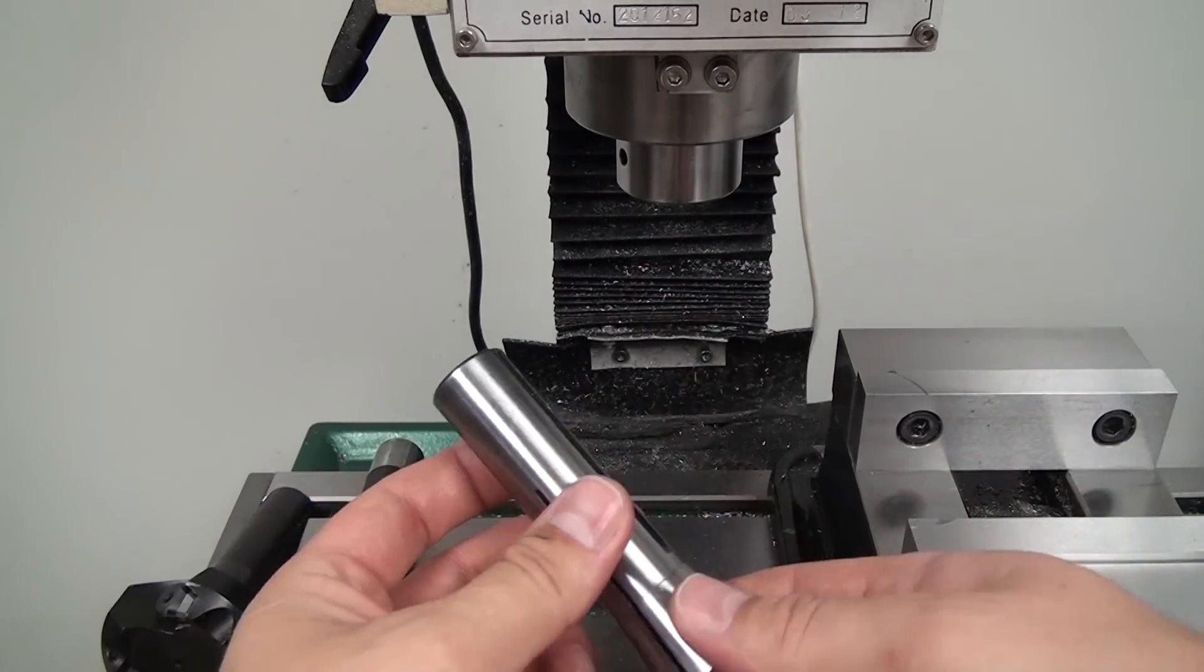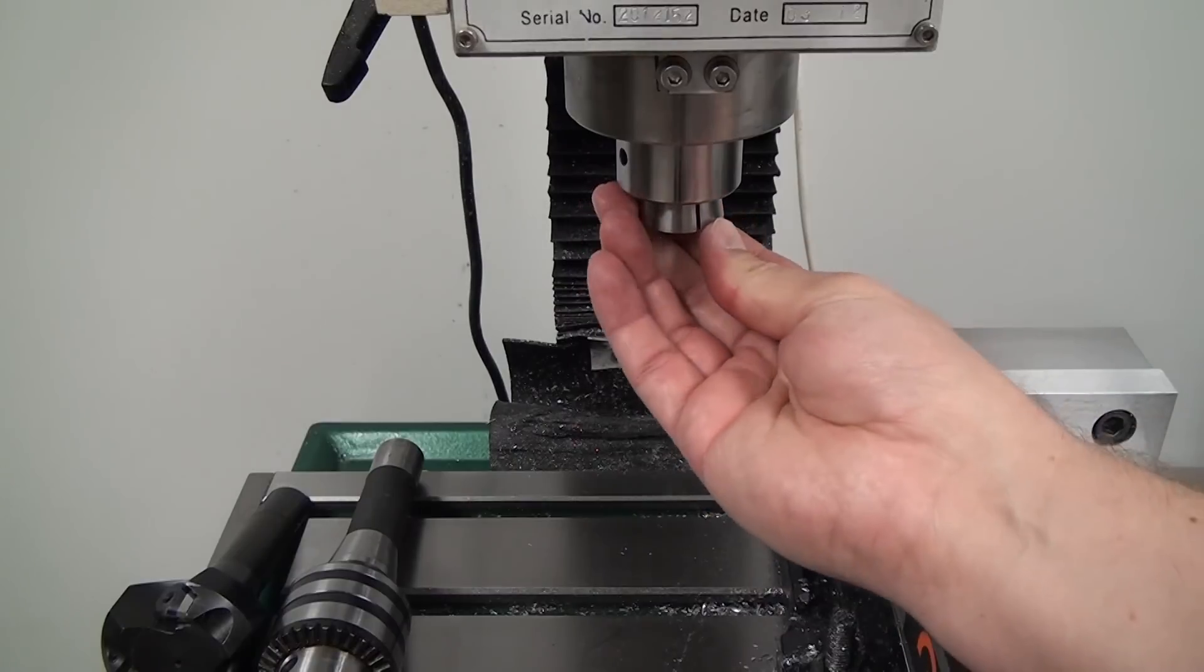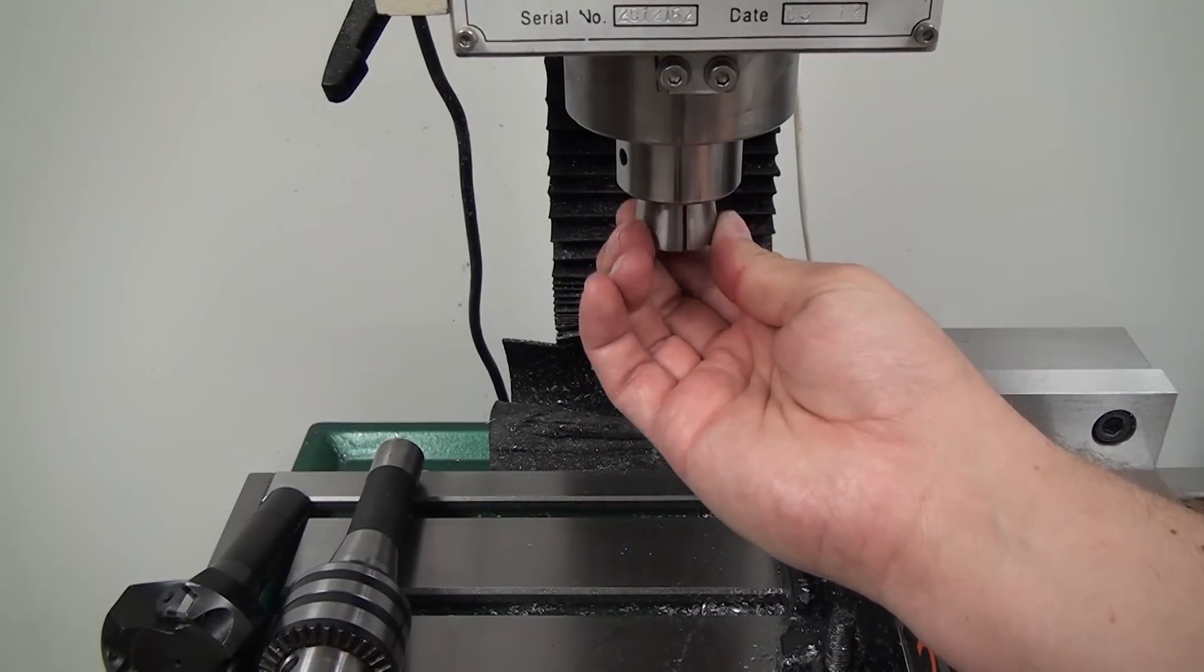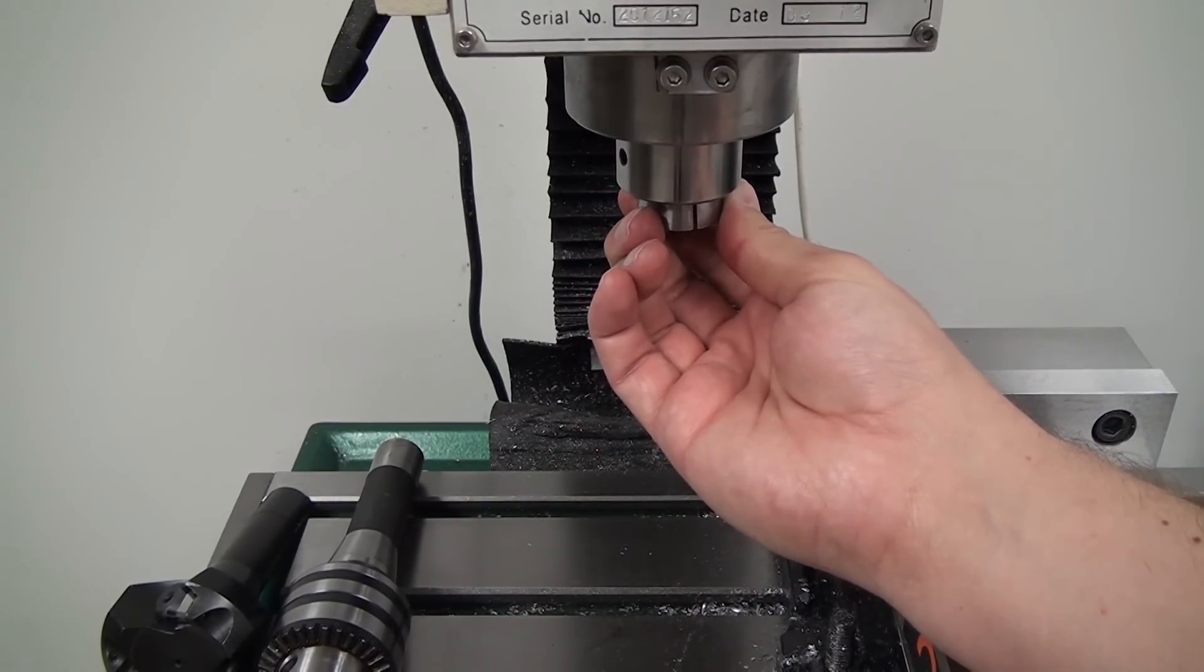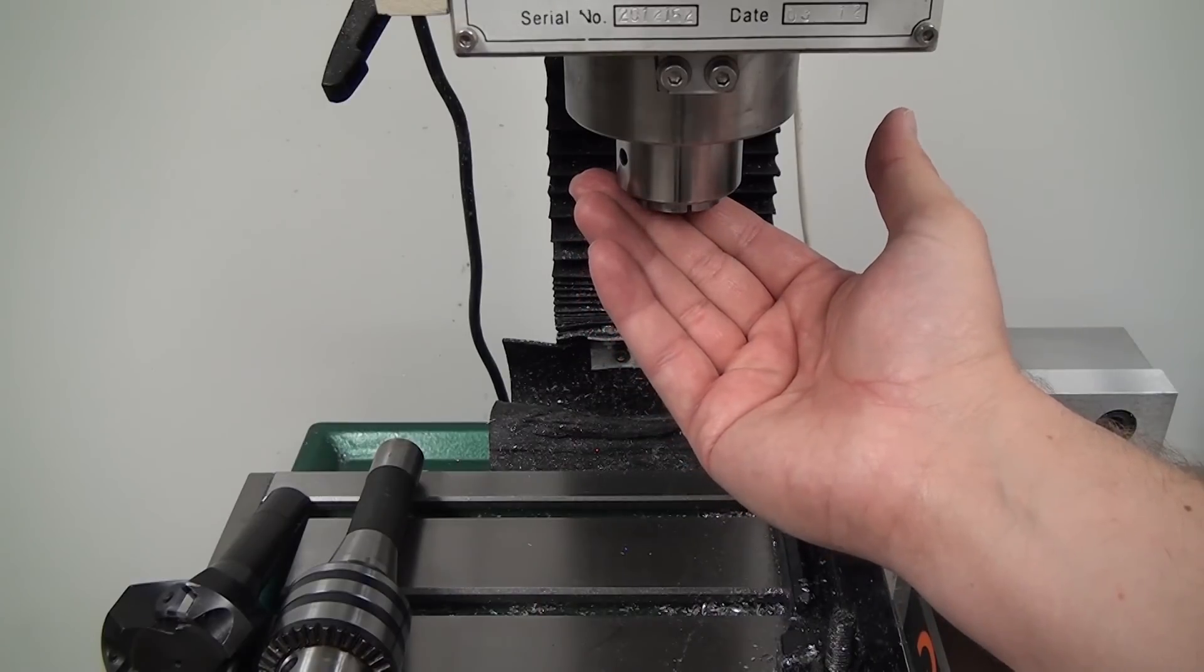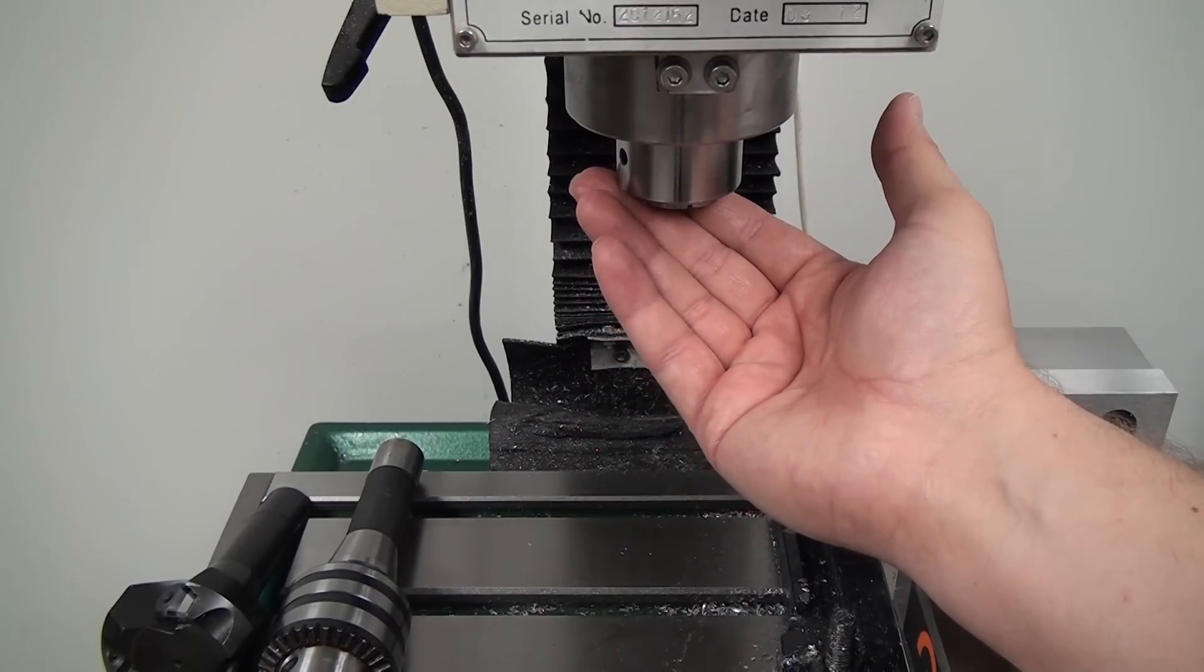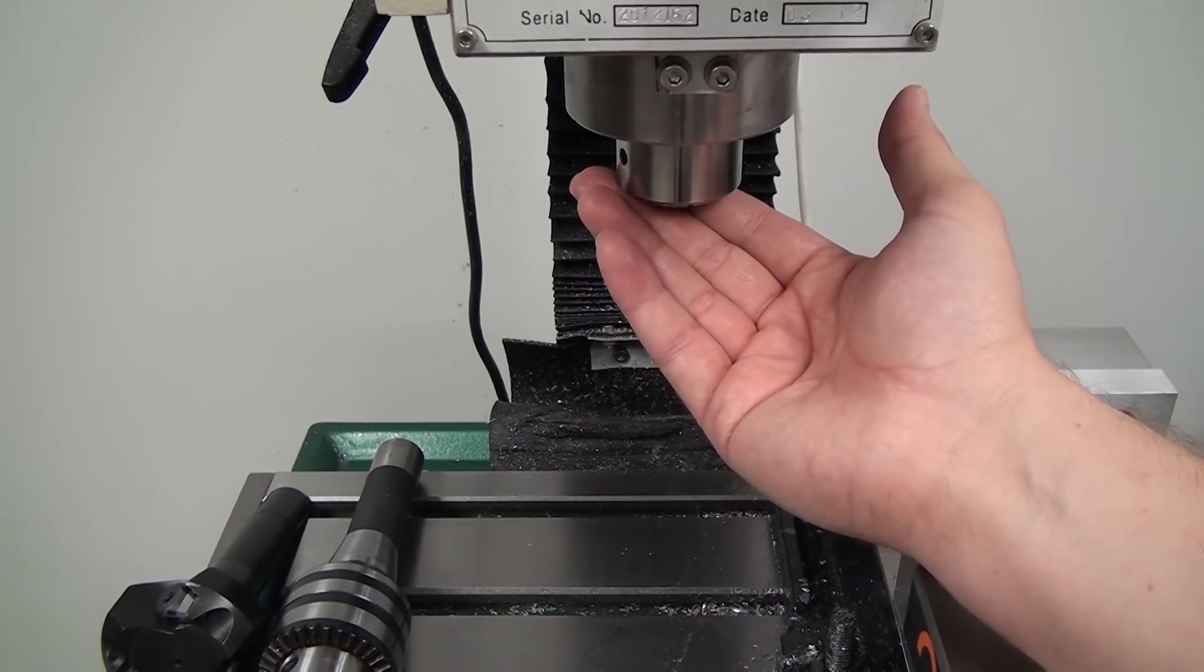This is Tormach's R8 conversion collet. This is basically a 3-quarter inch R8 collet and you could use it to maybe hold a 3-quarter inch end mill if you like, but it's intended to be used with the 3-quarter inch straight shank Tormach and Tormach compatible tool holders.